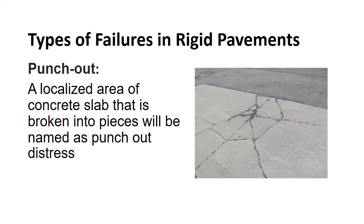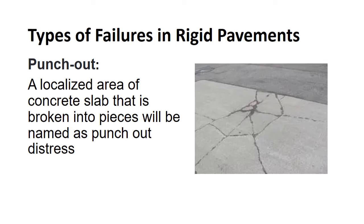Punch out is a localized area of concrete slab that is broken into pieces. The causes are heavy repeated loads, inadequate slab thickness, foundation support loss, or construction deficiencies such as honeycombing.